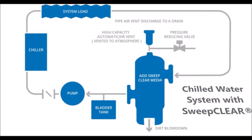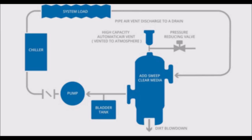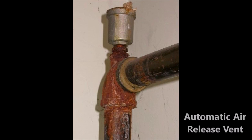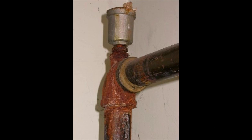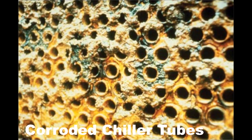Water loop systems can also experience air problems. Air found within hydronic water loop systems may be classified into three forms. First, free air. Various devices such as manual and automatic air vents are used to address the free air which floats up to the high points throughout the system.